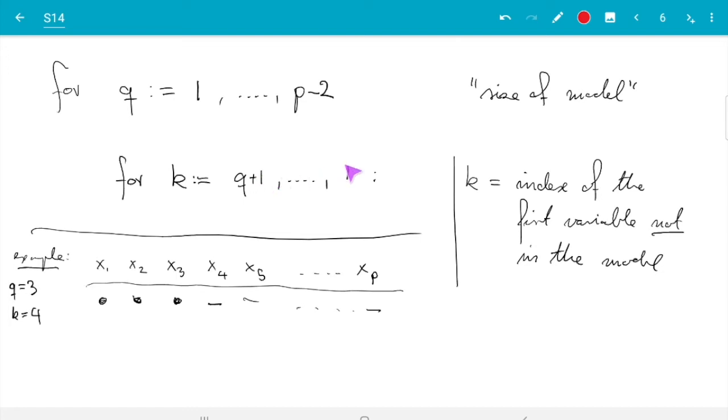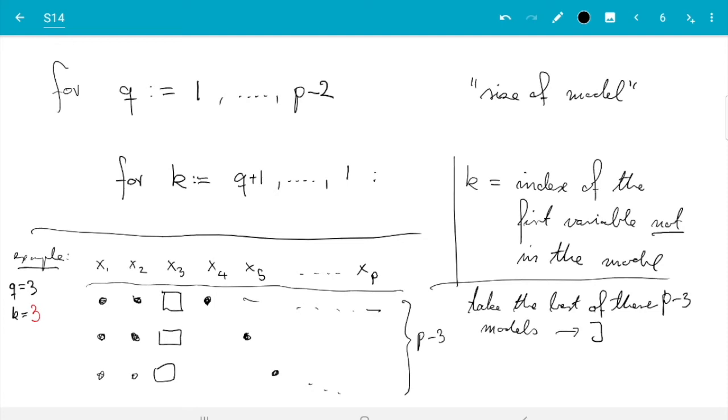So what I just did is I showed you the case for k equals q plus 1. Now if k equals, it's going down, so if k equals q in this example, then the assumption now is this variable is missing. And in the example we still have q equals 3, but we have now k equals 3. Then there is no longer one model to go with this because I drew only two black dots. So there must be a third black dot. So it could be this one or it could be this one or this one and so on. You see there are p minus 3 of them. So here we test p minus 3 models and then we take the best one. So take the best of these p minus 3 models and call it j. And then the trick goes similar with one tiny extra twist.